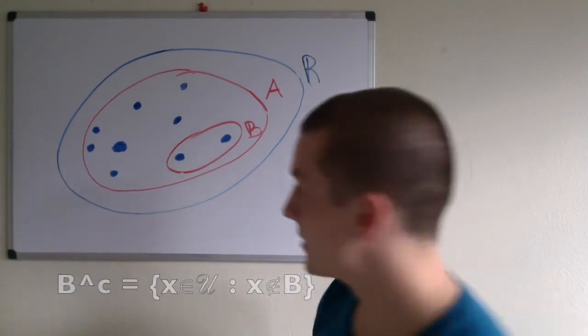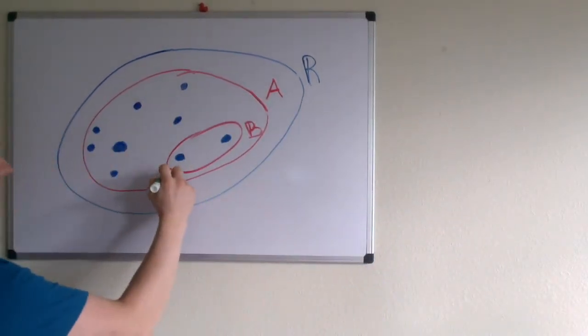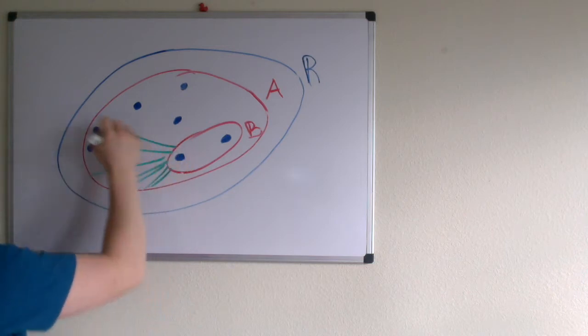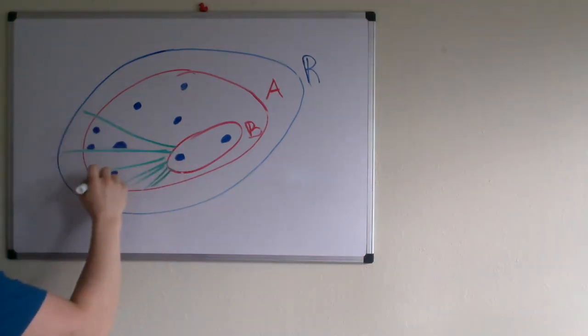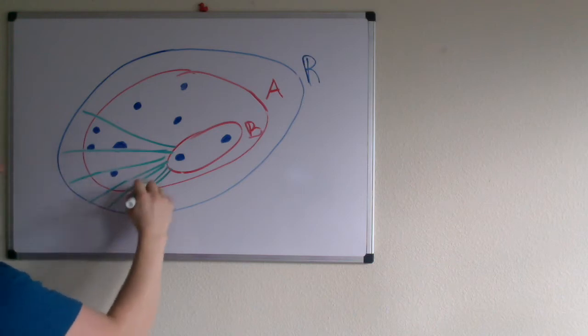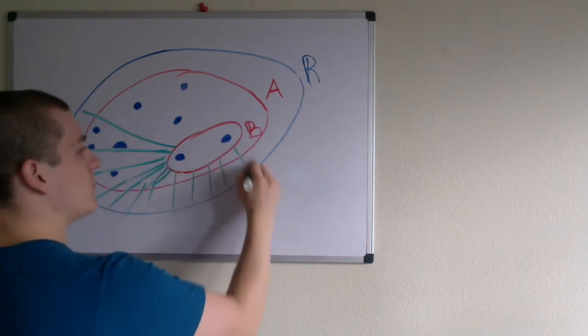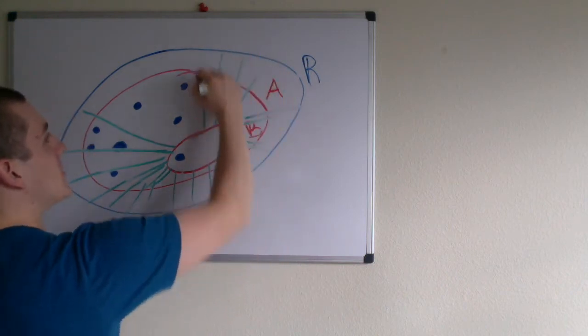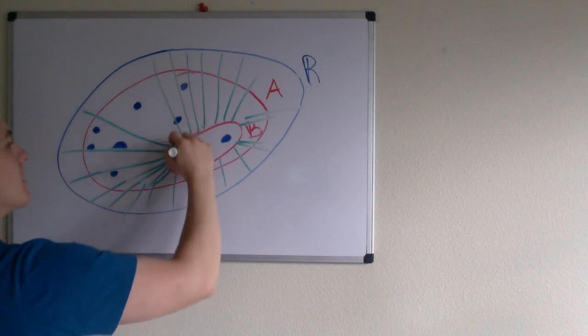So in this case, it would look like this. If I just highlighted everything, it would be everything within the universe still. So that is the complement of B. It's all the elements that are not in B.